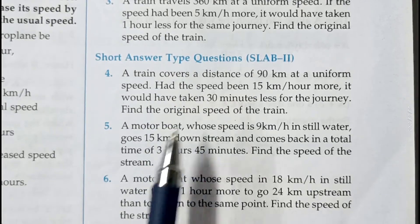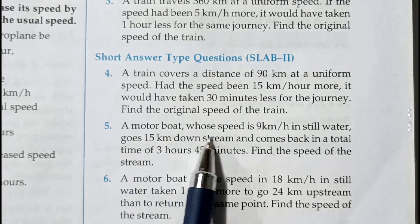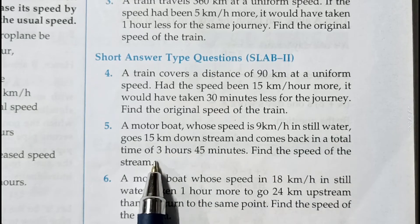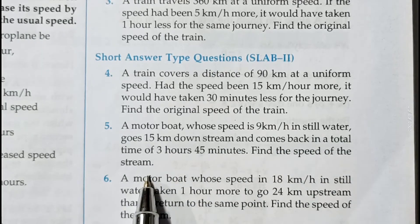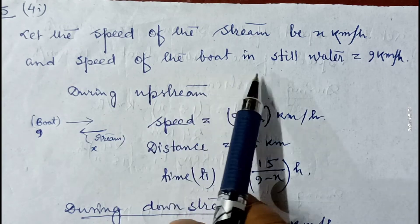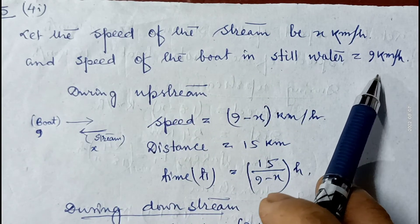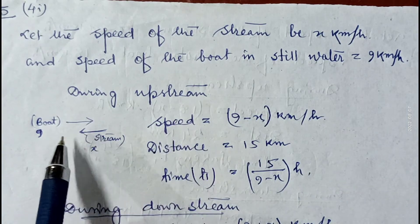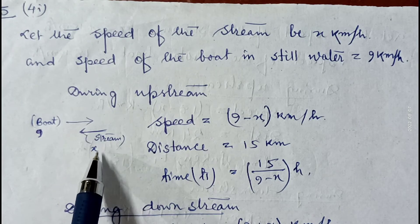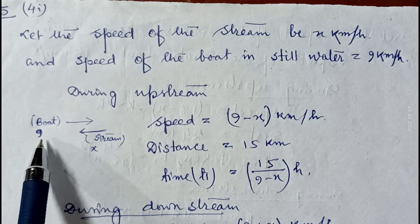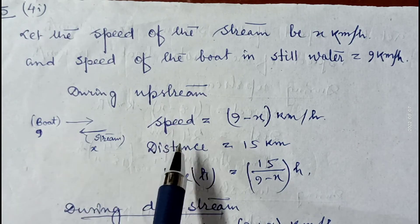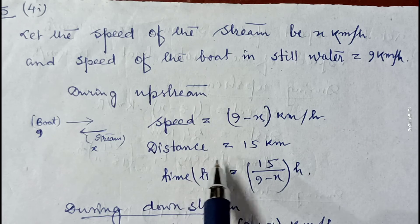Question number 4 is of the same type so it is not shown. Question number 5: A motorboat whose speed is 9 kilometer per hour in still water goes 15 kilometer downstream and comes back in a total time of 3 hours 45 minutes. Find the speed of the stream. Let the speed of the stream be x kilometer per hour; speed of the boat in still water is 9 kilometer per hour.